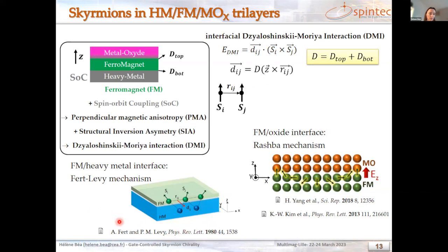We have mainly two mechanisms: the Fert-Levy mechanism at the interface between the heavy metal and the ferromagnet, and the Rashba mechanism at the interface between the ferromagnet and the oxide. At this interface there is an intrinsic electric field, which in the reference frame of the electron is felt as a magnetic field — the Rashba field — which drives a cycloidal rotation of the spins, creating the DMI.